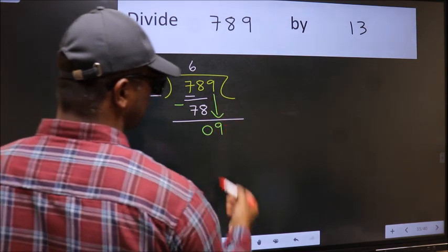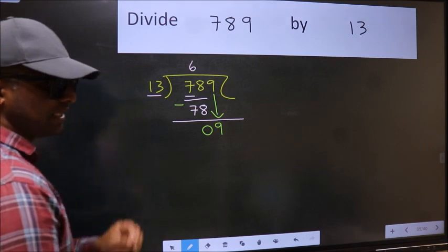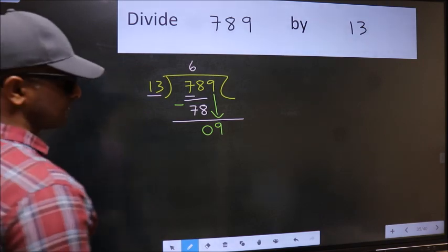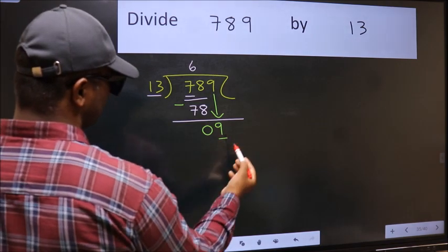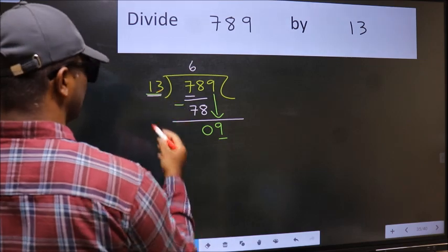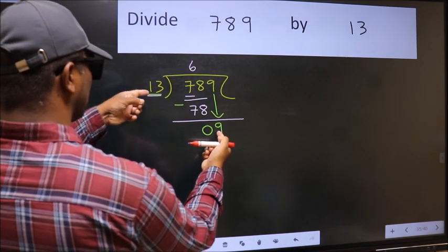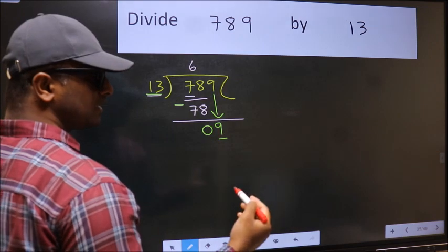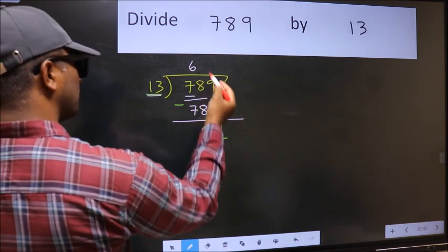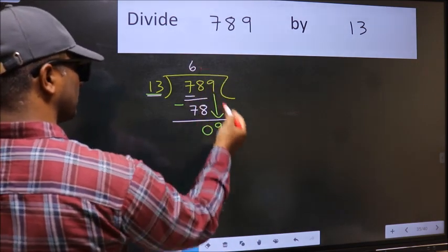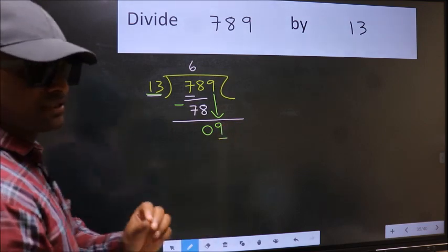After this step, the mistake happens. And the mistake is this: Here we have 9 and here 13. 9 is smaller than 13, so what many do is they directly put dot, take 0. Which is wrong.